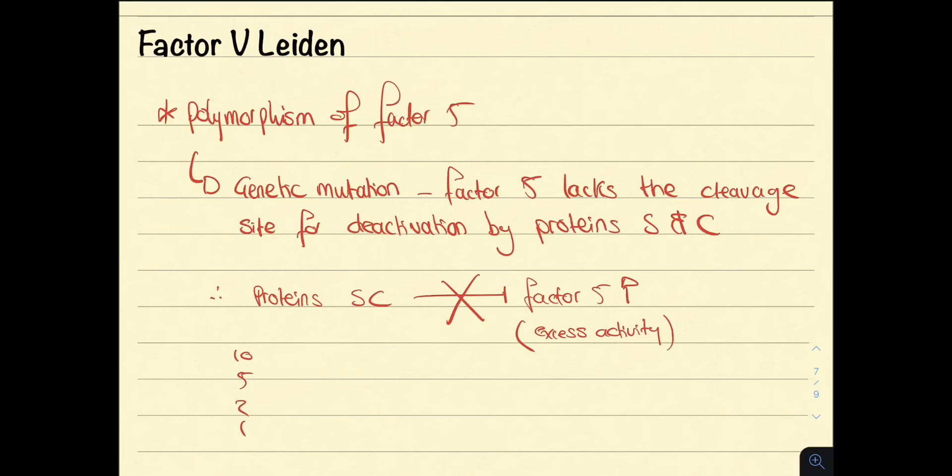So if we remember the common pathway, increased activity of factor V means there's increased risk of clot formation.